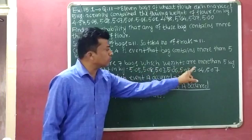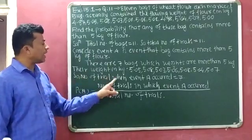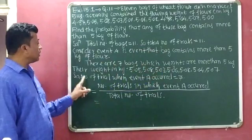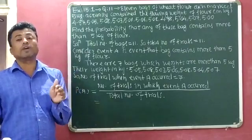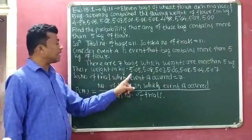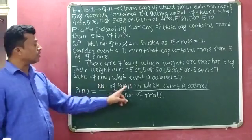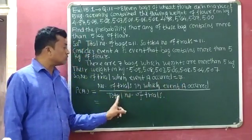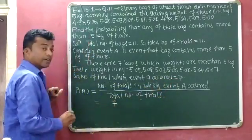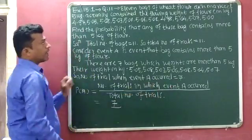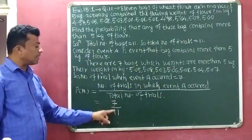Counting: 1, 2, 3, 4, 5, 6, 7. There are 7 bags whose weight are more than 5 kilograms. So, number of trials when event A occurred is equal to 7. Probability of event A equals number of trials in which event A occurred divided by total number of trials, which is 7 divided by 11. The final answer is 7/11.